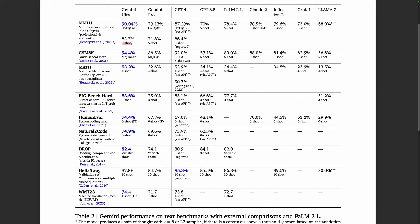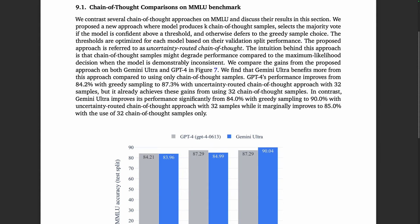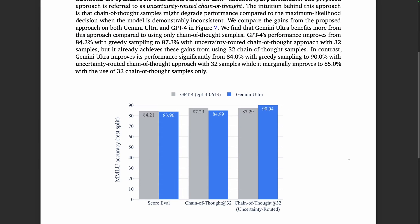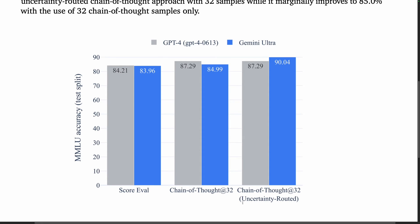On the standard 5-shot MMLU evaluation, GPT-4 is better at 86.4% versus 83.7% for Gemini Ultra. If you use a new prompting scheme proposed in this work called Uncertainty Routed Chain of Thought — where the model produces k chain-of-thought samples, selects the majority vote if the model is confident above a threshold, and otherwise defers to the greedy sample choice — then Gemini Ultra does a little better. That's highlighted here, where the Uncertainty Routed strategy appears to benefit Gemini Ultra, shown in blue, more than it benefits GPT-4, shown in grey.